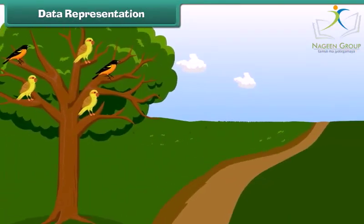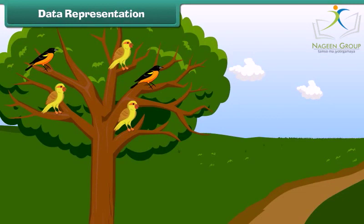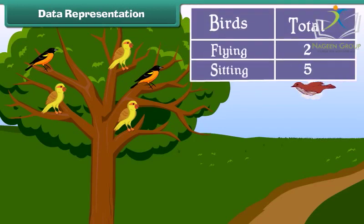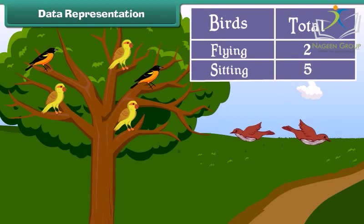It's a pleasant morning. Look at the birds near the branch of tree. We will now find the data of birds from this tree. There are two birds which are flying and five birds which are sitting on the tree.